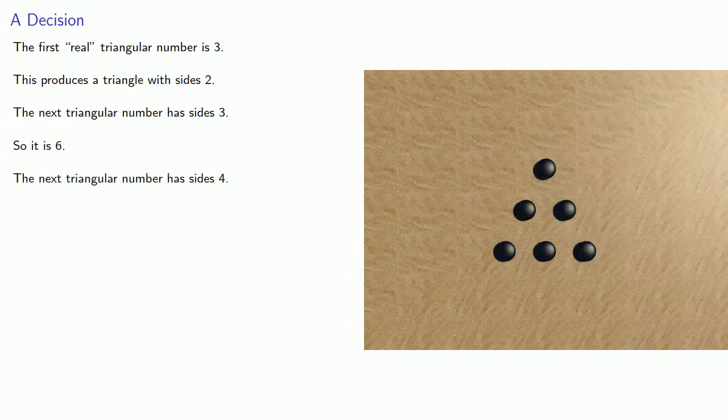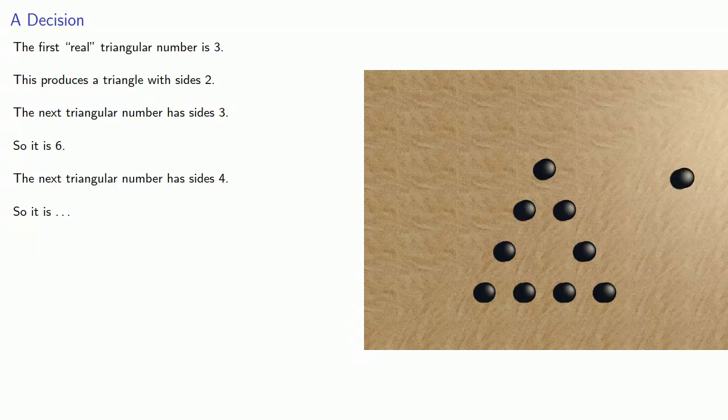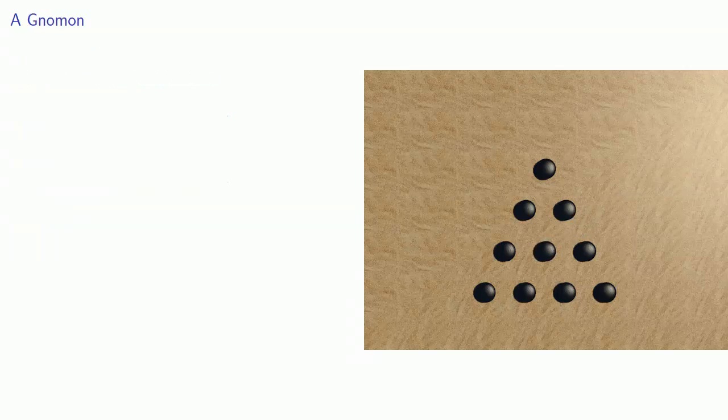Now the next triangular number has sides four. And so it is... Well, actually there's a problem. We have two possibilities for what that triangular number will look like. Maybe it's an open frame like this. Or maybe they're arranged like a set of bowling pins. To decide, we have to introduce a new idea, that of a gnomon.